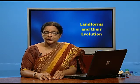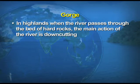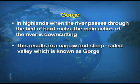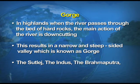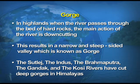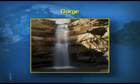What is a gorge? In highlands, when the river passes through a bed of hard rocks, the main action of the river is downcutting. This results in a narrow and steep-sided valley, which is known as a gorge. Various rivers have deep-cut gorges — for example, the Satluj, the Indus, the Brahmaputra, and the Gandak. Even the Kosi river has various gorges formed in its path. You can view a gorge on the screen, showing how the valley is formed and the water flows through it.